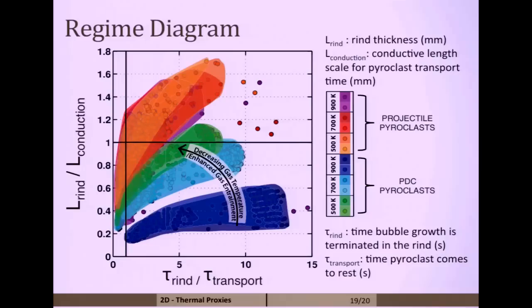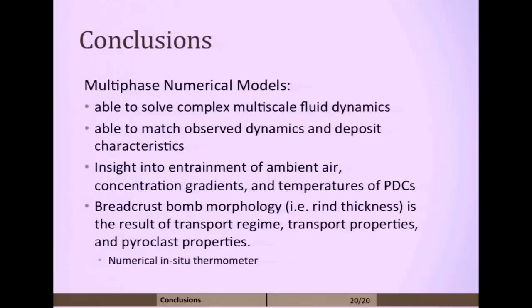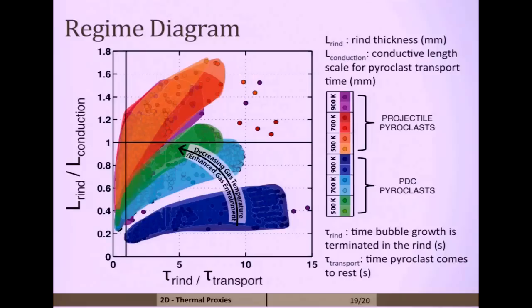We also get to look at some timing so we can maybe see when these clasts form. This is a timescale of rind formation over transport. Basically we see that these rinds are still forming once the clasts are deposited, which previously hasn't been known. Also, for the projectiles, they're larger rinds, but that's also because the convective force or the convective cooling is more dominant.